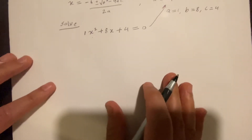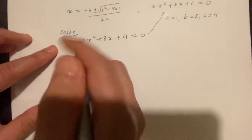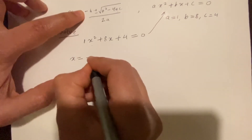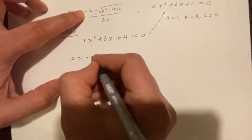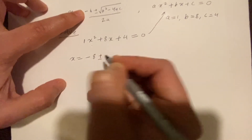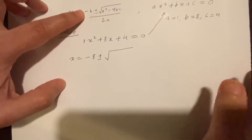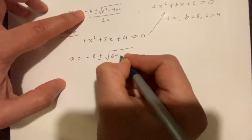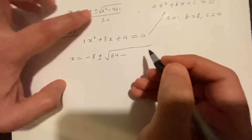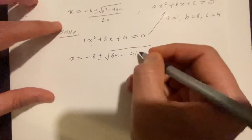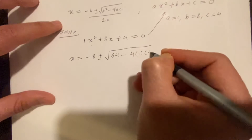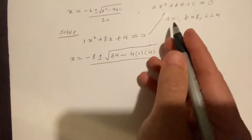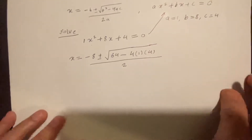Now we can use the quadratic formula. So x equals negative b, which is negative 8, plus or minus the square root of b squared — 8 squared is 64 — minus 4ac, which is 4 times 1 times 4, over 2a, which is 2 times 1, so just 2.